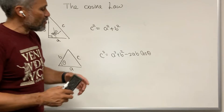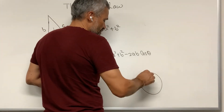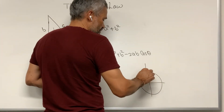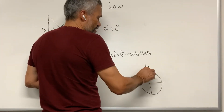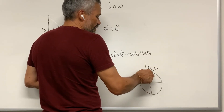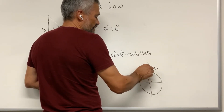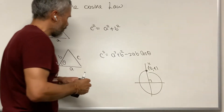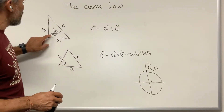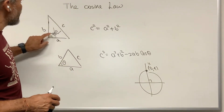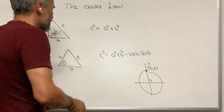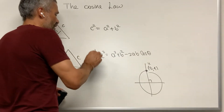Notice that cosine of 90 degrees: 90 degrees has terminal point (0, 1), so cosine of 90 degrees is the x-coordinate, which is 0. Therefore, when this angle is 90 degrees, the extra term vanishes and we just have the Pythagorean theorem. But in general, this is the cosine law.